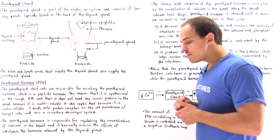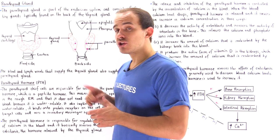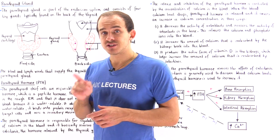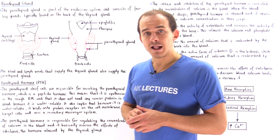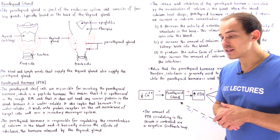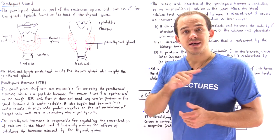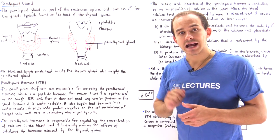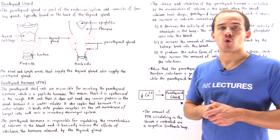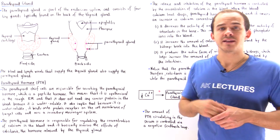When the parathyroid hormone actually reaches its target cell, because it is not soluble in lipids, that means it cannot actually pass across the membrane of the target cell.